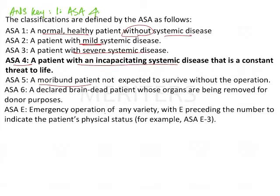ASA 6 is a declared brain dead patient whose organs are being removed for donor purposes. A patient who has suffered brain death would directly come under ASA 6.